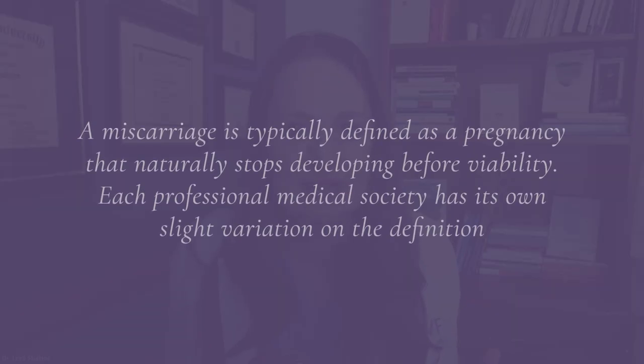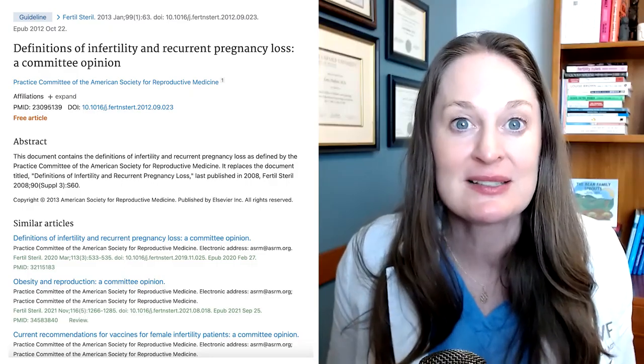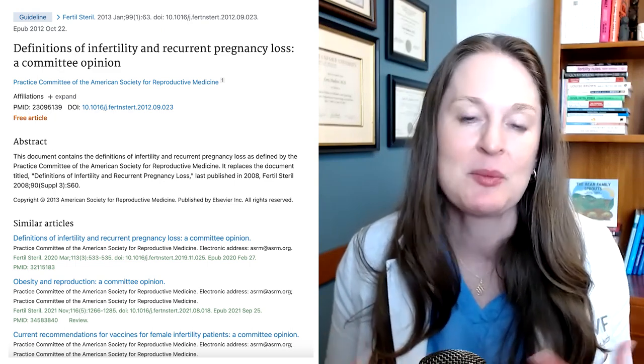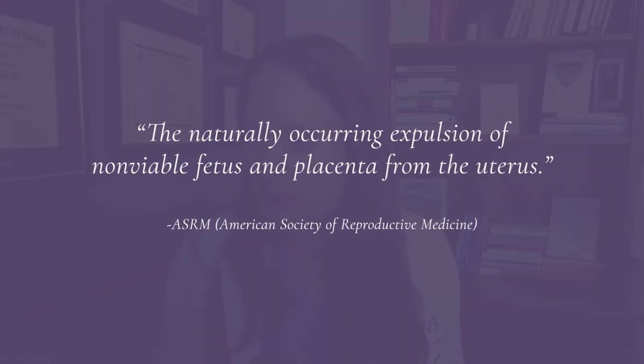A miscarriage in society is typically describing early pregnancy loss that stops developing on its own — sort of voluntarily. But professional medical societies have their own succinct and clear definitions, and they actually all differ a little bit. The American Society of Reproductive Medicine, which is my professional medical society for reproductive endocrinologists and people caring for those trying to build families, defines a miscarriage as the naturally occurring expulsion of a non-viable fetus and placenta from the uterus.